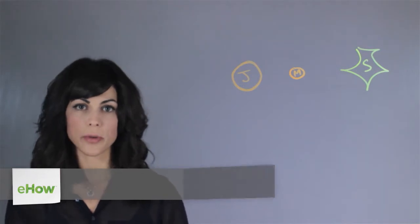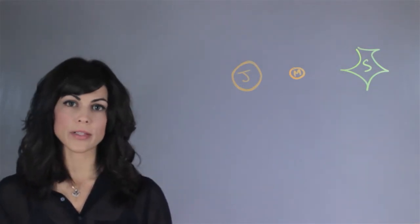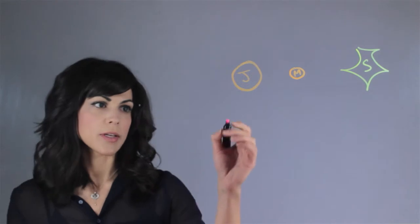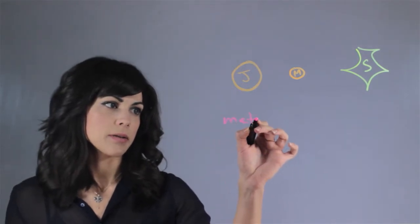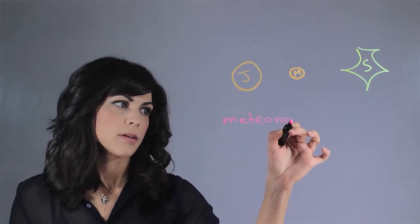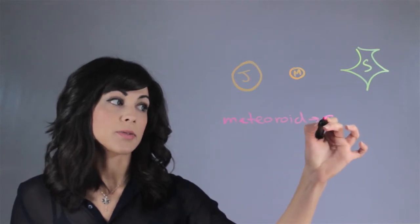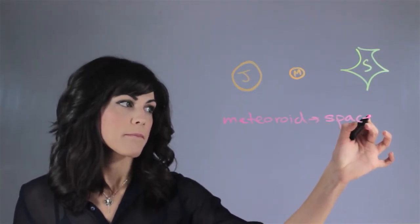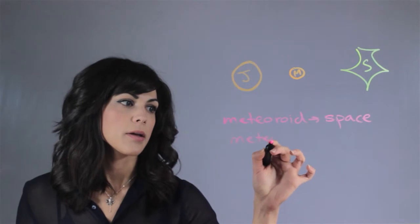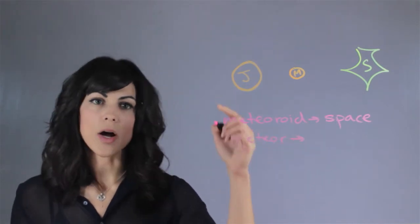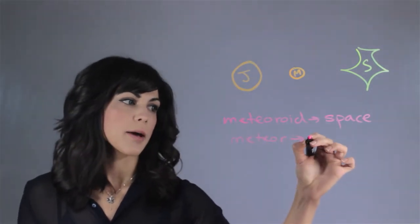So first let's talk about some terminology. We have three things that people tend to confuse. A meteoroid is the rock in space. A meteor is a rock as it burns through the atmosphere.